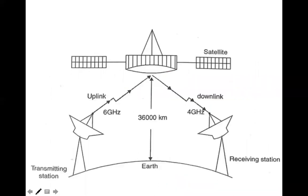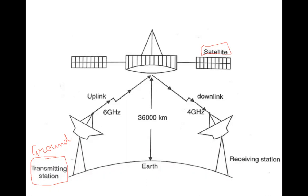Looking at this diagram, the satellite is up above. From the earth's surface we transmit the signal to the satellite. The station used to transmit the signal is called the ground station or transmitting station. If it is sending, it is the transmitting station; if it is receiving, it is the receiving station. The satellite receives the signal and then sends it back again to the earth surface to a receiving station.